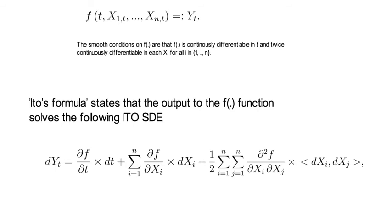Now look at the last term. This bracket dxi comma dxj bracket term is called the instantaneous covariation between process xi and xj.